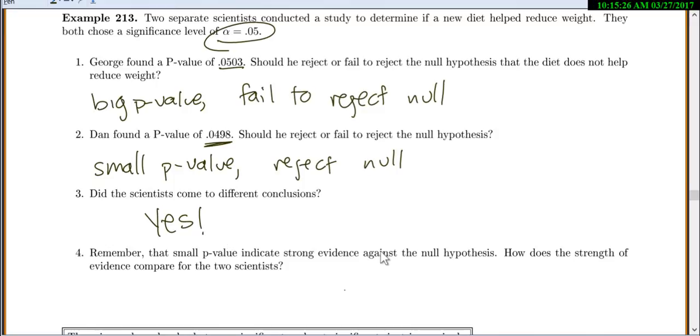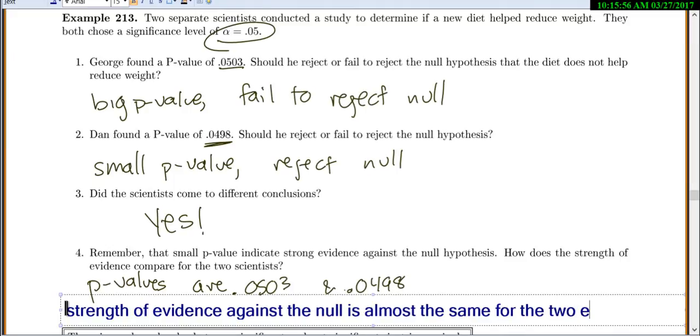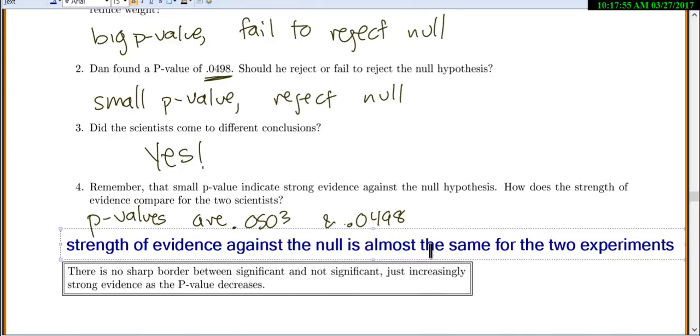And so what happened here? Let's see. Remember, our small p-value indicates strong evidence against the null hypothesis. How does the strength of the evidence compare for the two scientists? So their p-values are 0.0503 and 0.0498. Those are almost identical, right? So their strength of evidence against the null is almost the same for the two experiments. So in this one, we see an example of how there's no sharp border between significant and not significant results. Just increasingly strong evidence that the p-value decreases. So we did have to set a rule, and we'd say, okay, if it's smaller than alpha, we reject. But practically, does it make a difference if we have these two p-values? No.